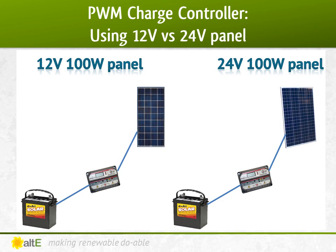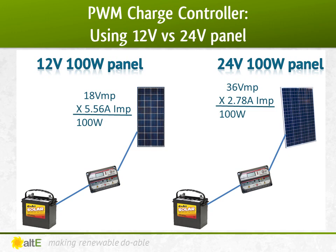You've seen how an MPPT charge controller can maximize the output when the solar panel nominal voltage matches the battery bank's nominal voltage. Here's another huge advantage of using MPPT. If you have a solar panel array that has a higher nominal voltage than the battery bank, a PWM charge controller is just going to throw away that extra voltage. Let's give an example of a 12-volt battery bank with two different 100-watt panels — one a 12-volt and one a 24-volt. Since watts equals volts times amps, a 100-watt 12-volt nominal panel with a VMP of 18 volts has an IMP of 5.56 amps. 18 volts times 5.56 amps equals 100 watts.